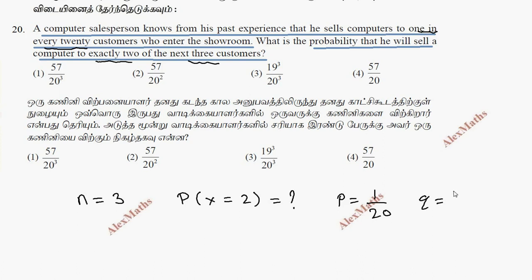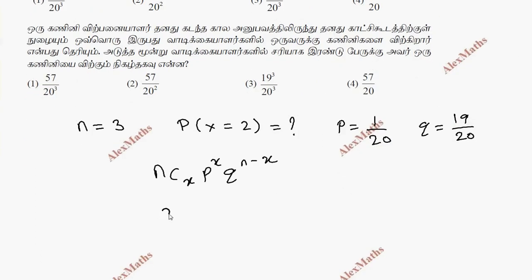P equals 1 by 20, q equals 19 by 20. For P(x = 2), we'll use the formula nCx times p to the power x times q to the power n minus x. So 3C2 times 1 by 20 whole power 2 times 19 by 20 whole power 3 minus 2.